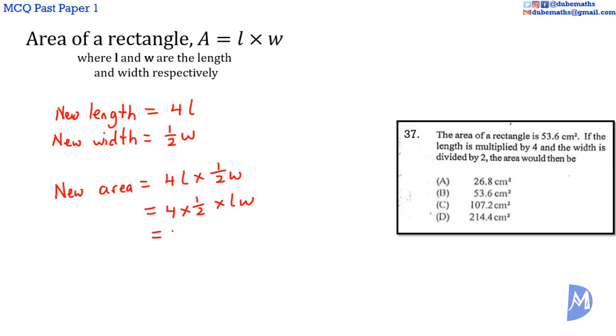4 times one-half equals 2, so 2LW. We know the area of the original rectangle equals length times width, which is 53.6 cm squared. Therefore, 2LW equals 2 times 53.6, which equals 107.2 cm squared. The answer is C.